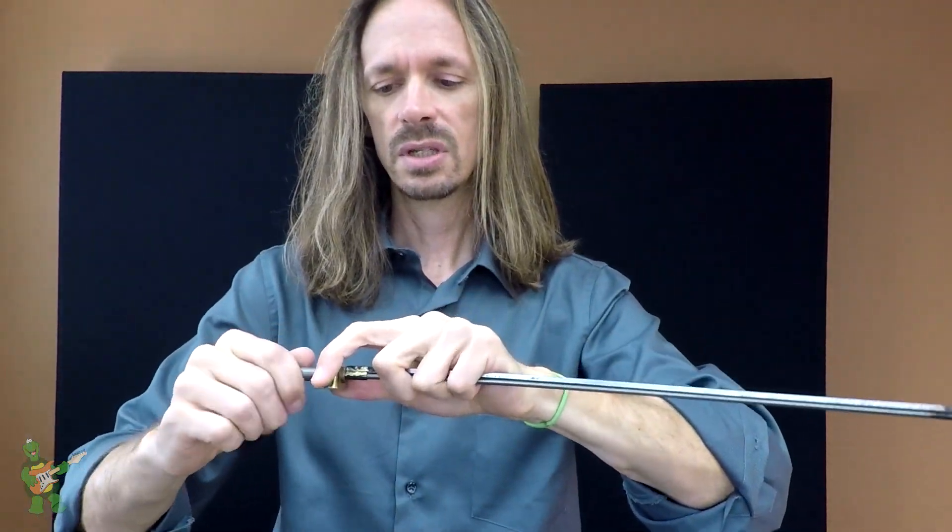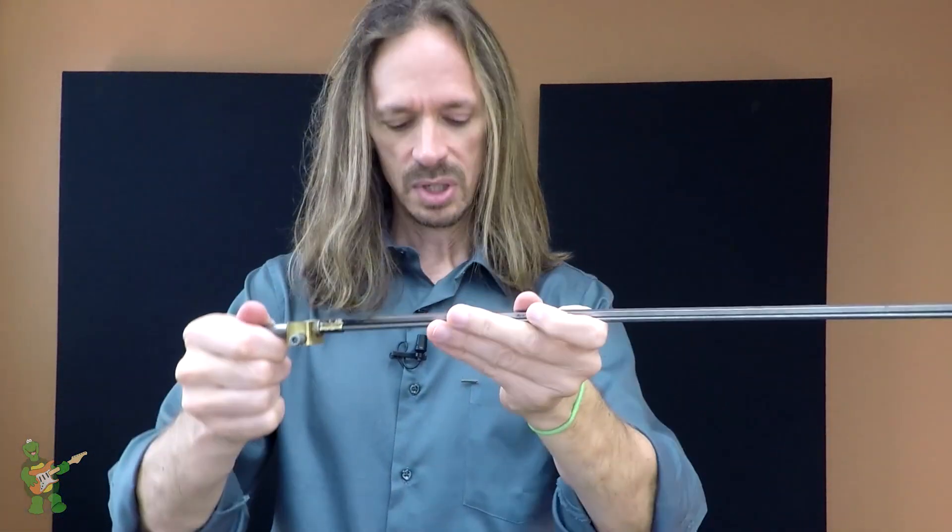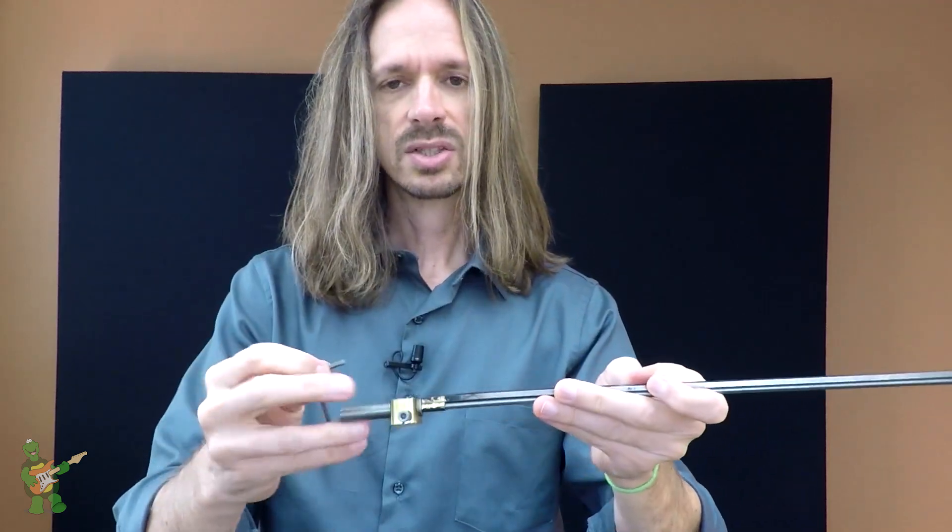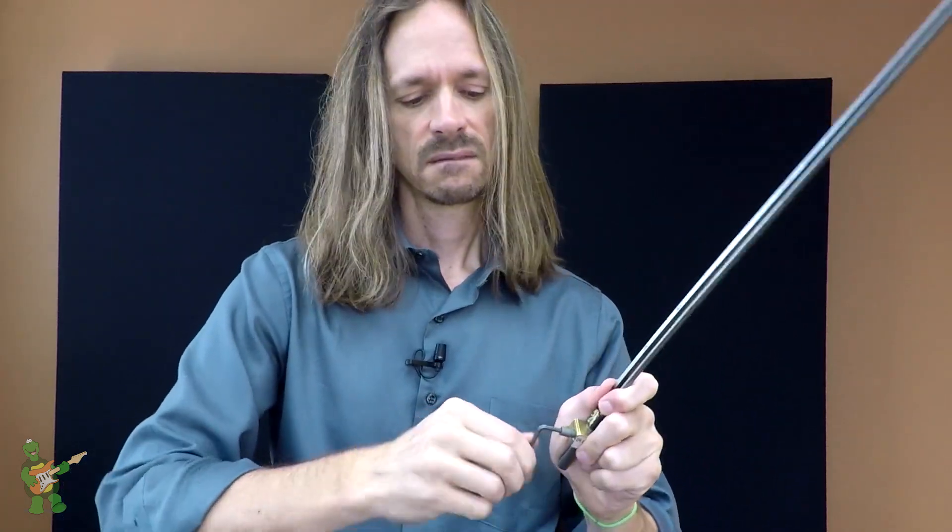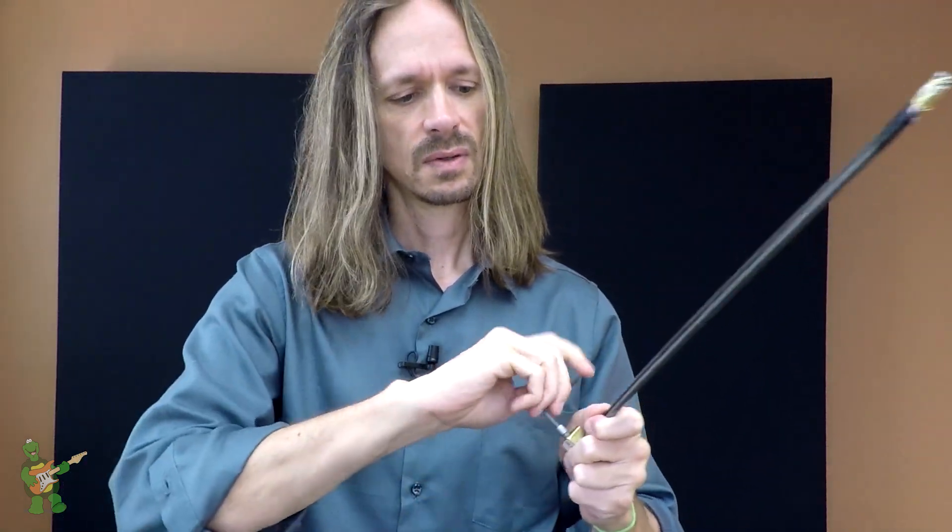And if you loosen it, it relaxes back to flat. But now you can also make adjustments here with an allen wrench, and as I tighten up the mechanism, it will cause our truss rod to bow.